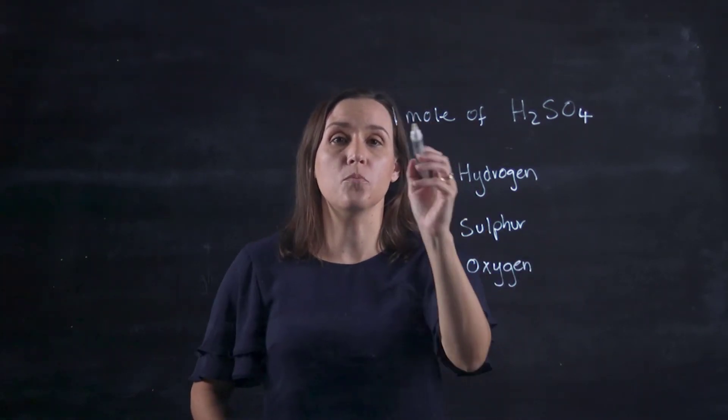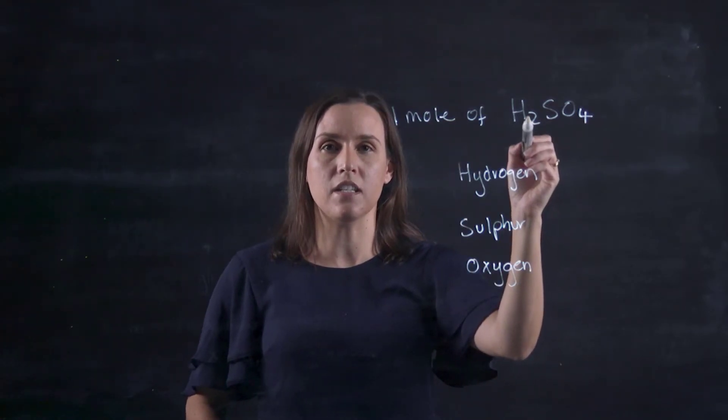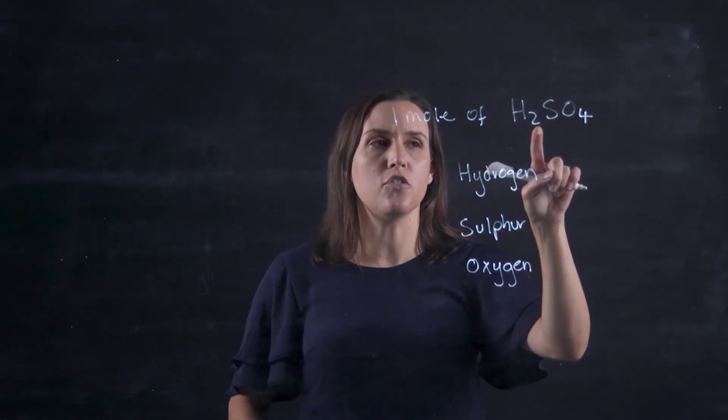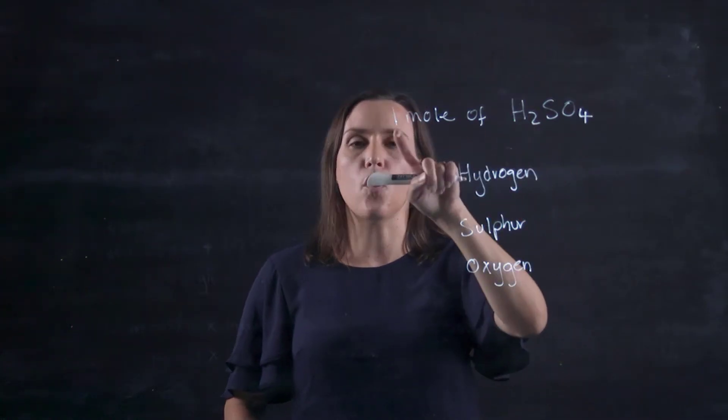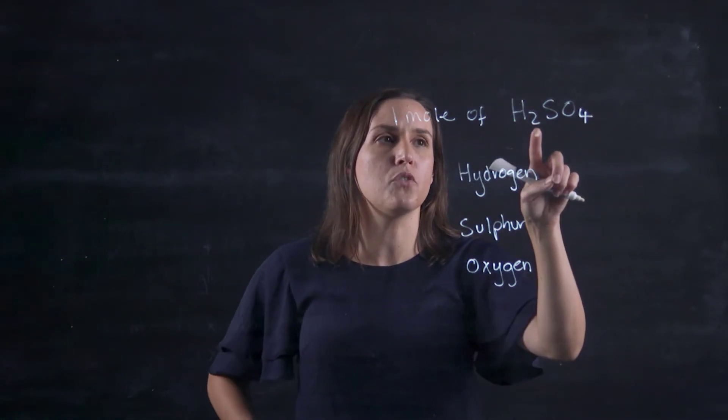So to work it out I multiply the number of moles by how many times that element is seen in the chemical formula. Hydrogen, we see it two times. It's got the subscript two here indicating there's two of those hydrogens, and we've got one mole of this, so when it splits up I will get two lots of one mole.